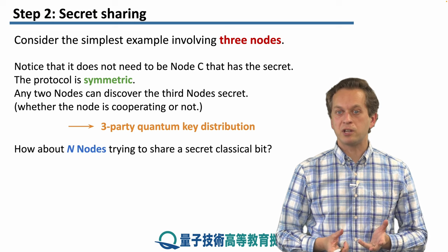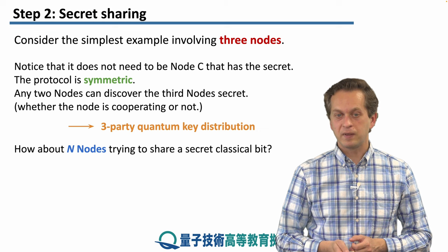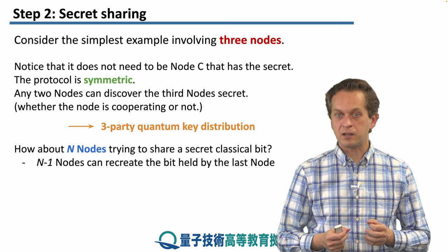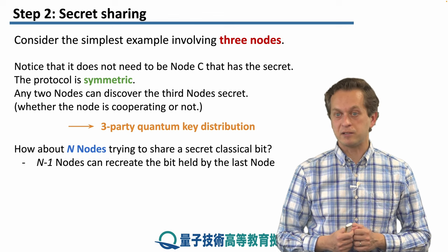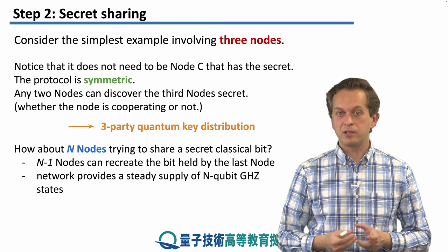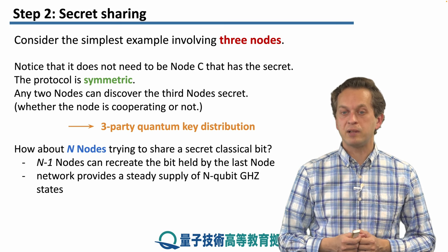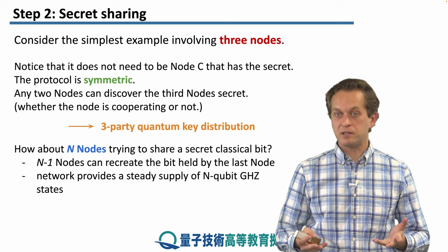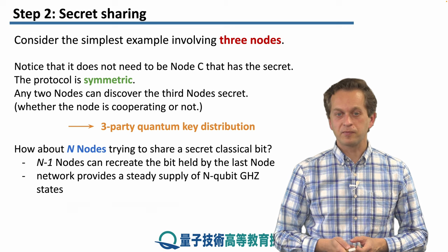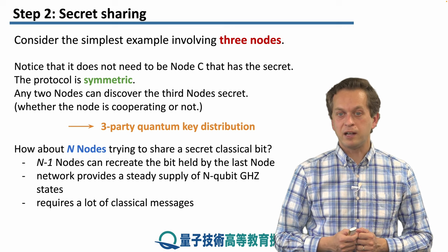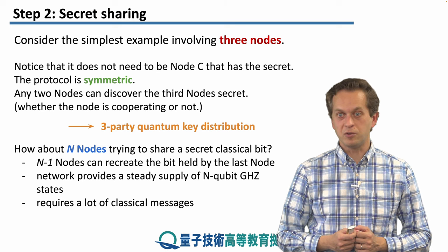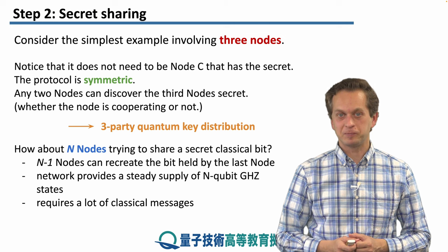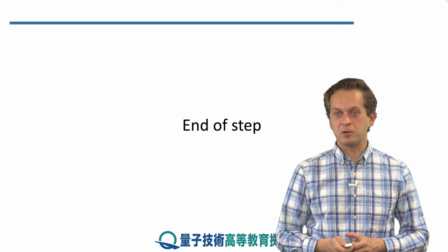So how about n nodes trying to share a secret classical bit? Well, in that case, we require n-1 nodes that can recreate the bit held by the last node. And also the network needs to provide steady supply of n qubit GHZ state in order to not share only one secret, but many secrets. And also we require a lot of classical messaging. So this is not so good when we think about the overall load on the network. This concludes our basic discussion of secret sharing.